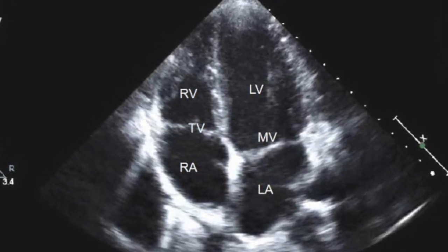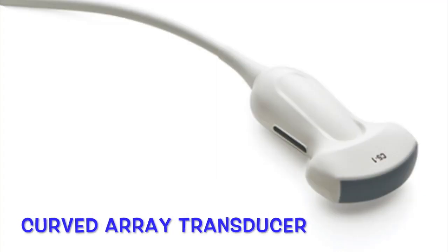Next we have a curved array transducer, which is wider and larger than the cardiac transducer. This one is used mostly for abdominal or gynecological studies, outside of transvaginal. You can also see there is a line going down the handle — all transducers have some form of indicator showing which direction should point toward the patient's head or toward you. Without it, your image will be backwards — I've definitely done that before.